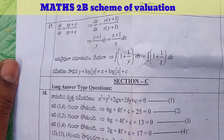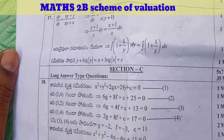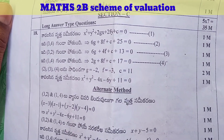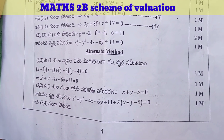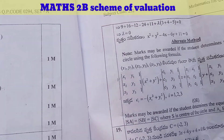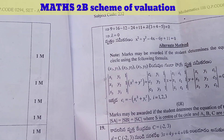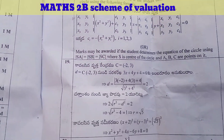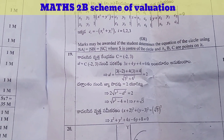The 17th question and 18th question are there. Alternate methods are there — 3 methods are there. 19th question.